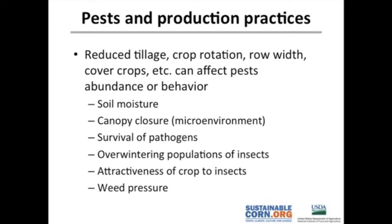Really, every production practice we look at could affect one of these pests — insects, diseases, or weeds. That ranges from soil moisture, how quickly the canopy closes and how thick it is, the survival of pathogens in the case of reduced tillage, overwintering of insects, the attractiveness of the crop to insects, and weed pressure.